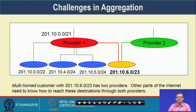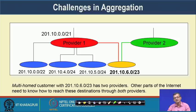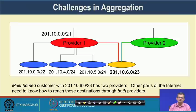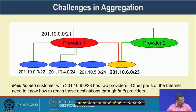There are challenges with aggregation in scenarios of dual-homing or multi-homing. For example, IIT Kharagpur taking internet connections from provider 1, provider 2, and provider 3 means the network cannot be identified by a single simplified aggregation. There are challenges, but nevertheless aggregation reduces the load on routing tables.